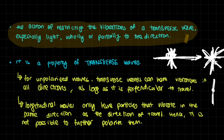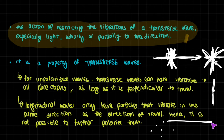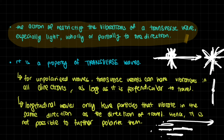However, for longitudinal waves, just like sound waves, they have particles that vibrate in the same direction as the direction of travel. If you have particles in the air and the sound is moving in one direction, the particles in the air are going to move back and forth in that same direction. So these already only have one direction of vibration, whereas transverse waves have many directions of vibration. That's why it's impossible to further polarize longitudinal waves.